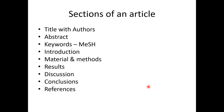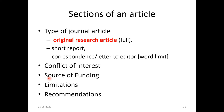Now we move into the journal article sections. A journal article starts with the title and authors, then an abstract and keywords — usually called MeSH terms, that is Medical Subject Headings. Then you have introduction, materials and methods, results, discussion, and conclusion. This format of scientific writing is called the IMRAD style: Introduction, Methodology, Results, And Discussion, followed by conclusion and references. Other sections include conflict of interest, source of funding, limitations, strengths, and recommendations.